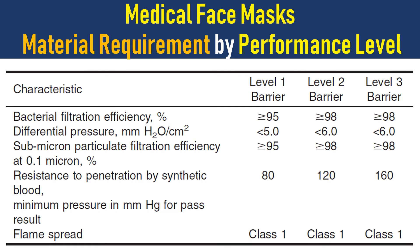Particulate filtration efficiency should be equal to or greater than 95 percent for level one barrier, equal to or greater than 98 percent for level two, and equal to or greater than 98 percent for level three. Resistance to penetration by synthetic blood should be a minimum of 80 mmHg for level one, minimum 120 mmHg for level two, and minimum 160 mmHg for level three.